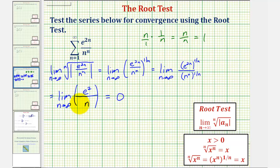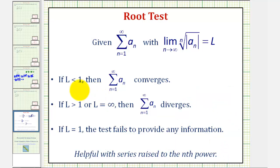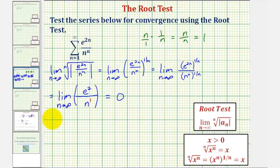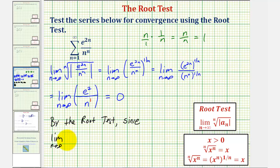We can also look at the degree of the numerator and denominator. The degree of the numerator is zero, and the degree of the denominator is one. Since the degree of the denominator is greater than the degree of the numerator, the limit equals zero. Going back to our notes, since zero is less than one, the series converges. By the root test, since the limit as n approaches infinity of the nth root of the absolute value of a sub n equals zero, which is less than one, the series converges.